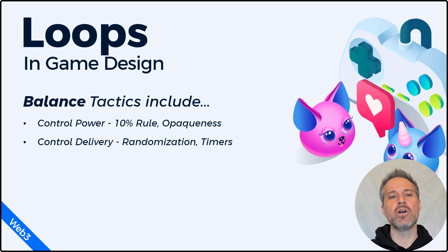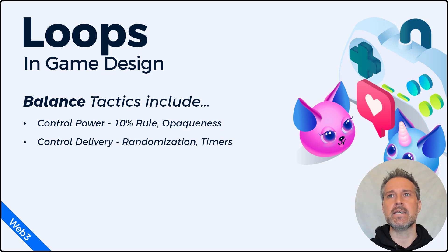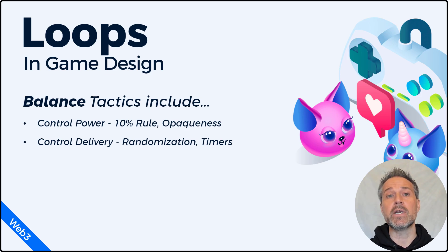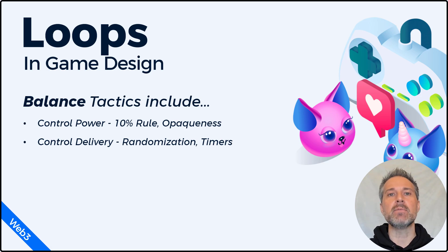Some of the balance tactics that you can use are controlling the power and delivery of your items. For example, finishing a quest gives you the upgrade to your sword. Thinking about a 10% boost in the abilities is good enough for the user to be excited about it, but it's not so overpowered that it messes with the balance of the game. Also, instead of explicitly showing that 10% in the item lookup or details, being opaque about it and hiding that detail until the point of reward allows you to fluctuate it from a 9% bonus to an 11% bonus if that helps balance your game out later. The delivery can be controlled as well — instead of explicitly winning a sword, maybe after the quest the user has the chance to win the sword. That chance percentage could be fluctuated, as well as offering a timer. Perhaps there's a chest that opens only after 10 minutes or 10 days of gameplay. All these tactics together will help you expand your game universe while maintaining balance.